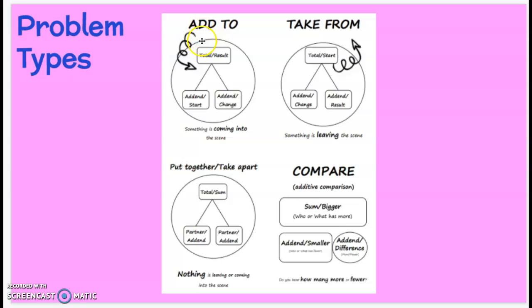Add to problems - something is coming into the scene. Take from problems - something is leaving the scene. Put together take-apart problems - nothing is leaving or coming into the scene. Compare problems - we're comparing how many more or fewer.